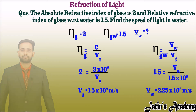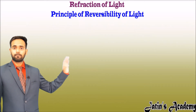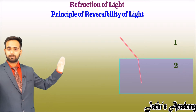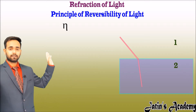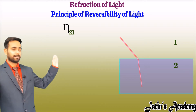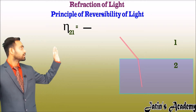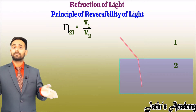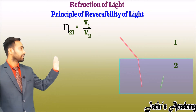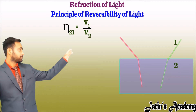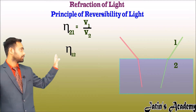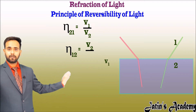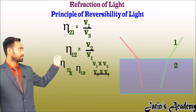Now see the principle of reversibility of path of light. Light coming from medium 1 to medium 2 gives n21 = v1/v2. Reversing the path means light goes from medium 2 to medium 1, so the refractive index of medium 1 with respect to medium 2 is n12 = v2/v1. Now multiply these two equations.